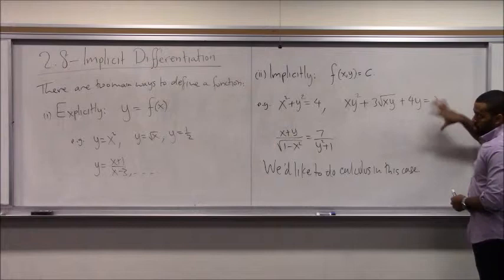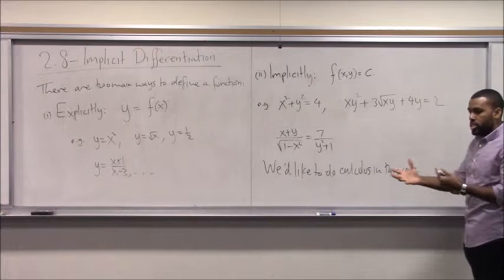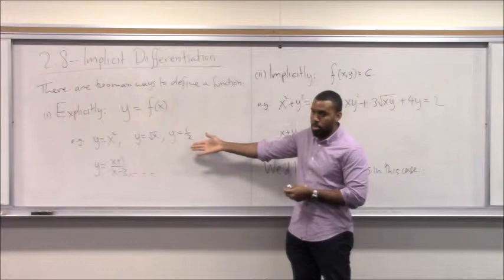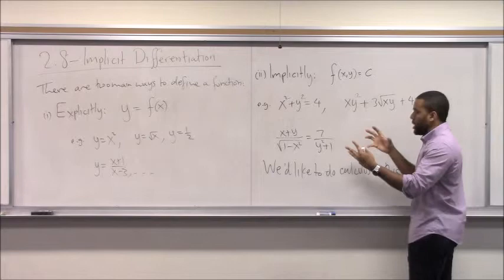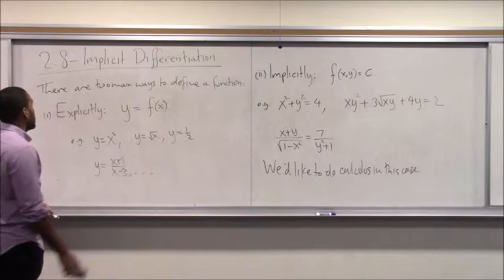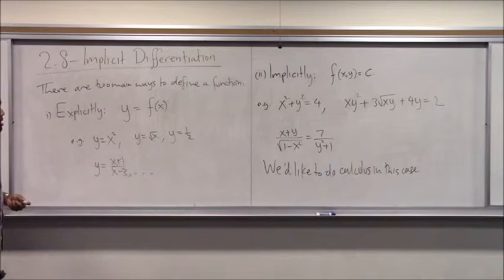Knowing how to do calculus in this situation is actually super important, because usually in the real world, when someone figures out a function that describes some natural phenomena or a relationship, it normally comes to you ugly like this. Very rarely in nature are you going to see a clean explicit function. Usually all the variables are mixed up, but you still want to talk about rate of change. So once you want to differentiate something when your x's and y's are mixed together, that's called implicit differentiation — because you're differentiating an implicitly defined function.